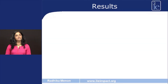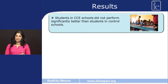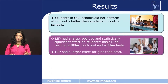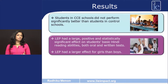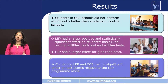Let's take a look at the results. Students in schools that received the Continuous and Comprehensive Evaluation system did not perform significantly better than students in control schools — the program did not have an impact in Hindi or Maths. The Learning Enhancement Program, on the other hand, had a large, positive and significant effect on basic Hindi reading abilities, seen in both oral and written tests, and the program had a larger effect on girls than boys. Combining both programs had no significant effect on test scores relative to just having the Learning Enhancement Program alone.